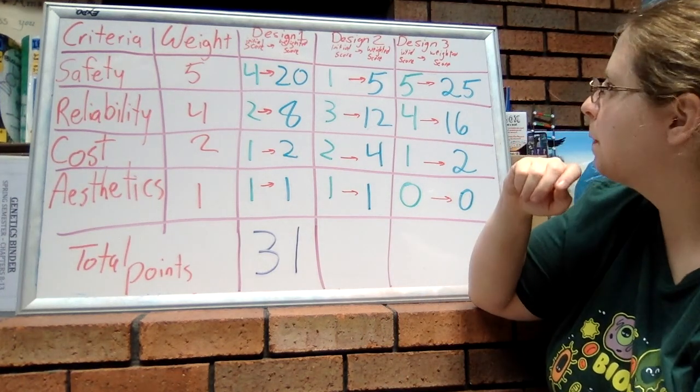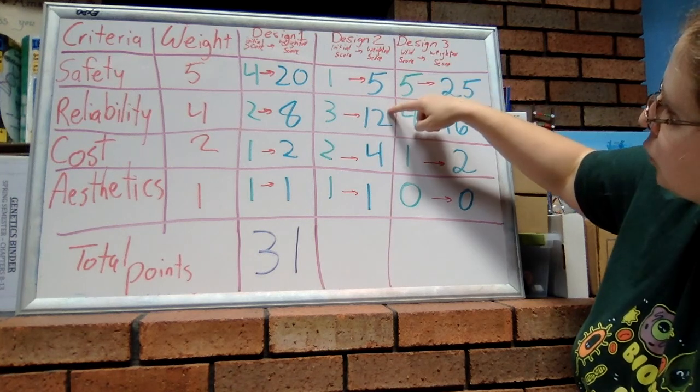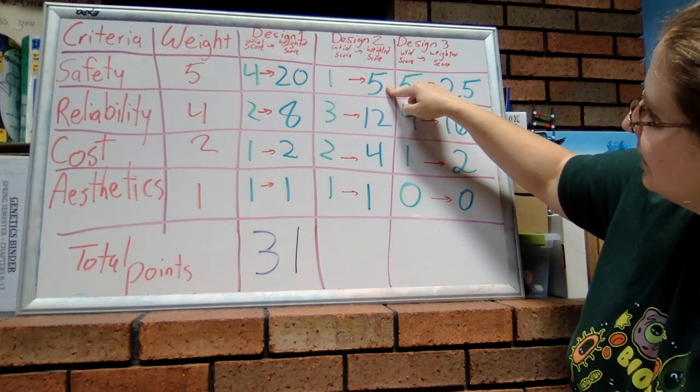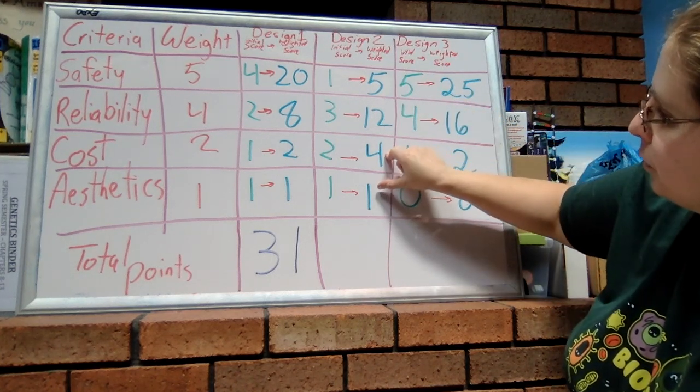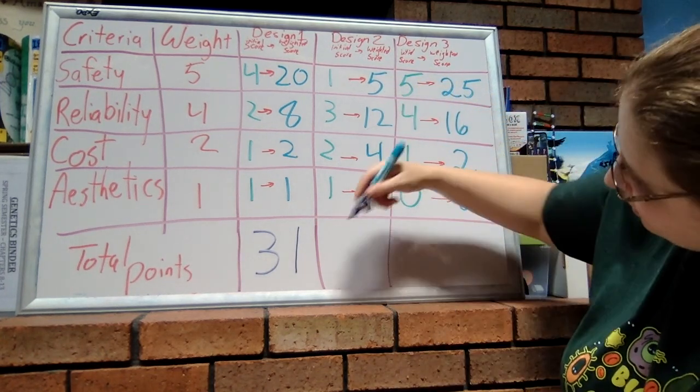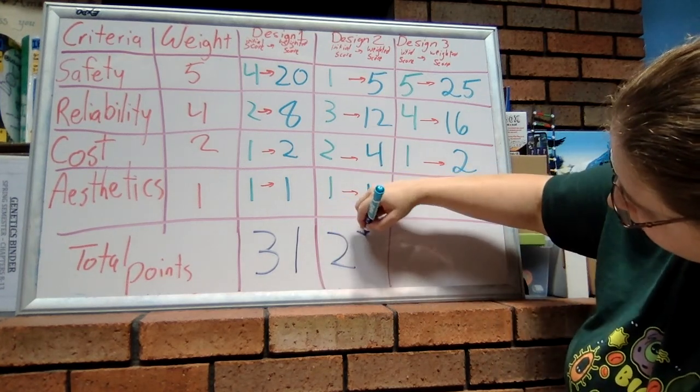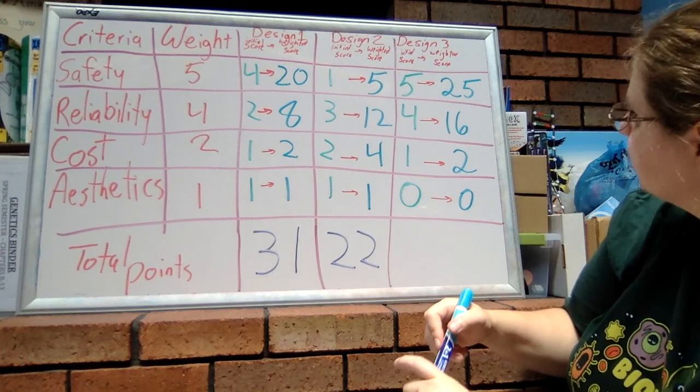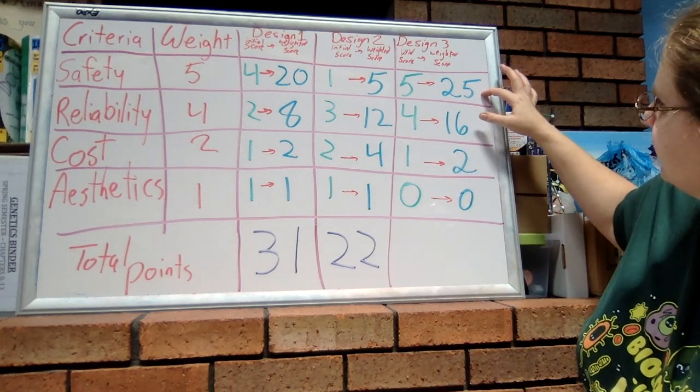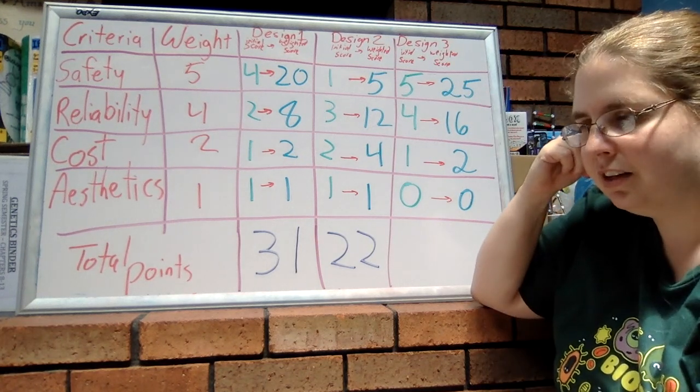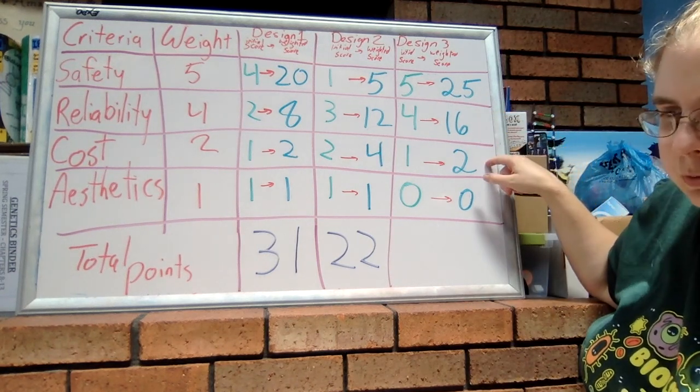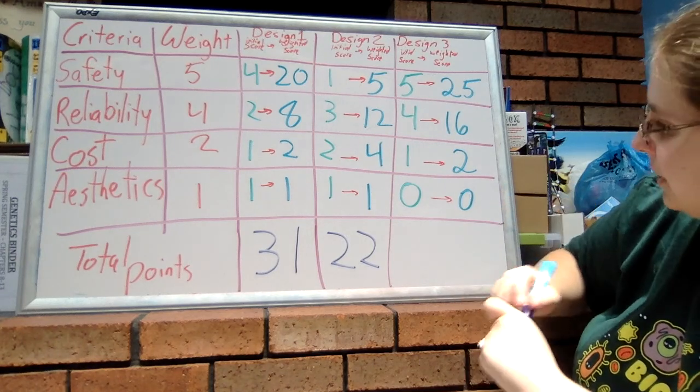So now we have 12 plus 5—oh, anyway, here we go—4 plus 1 is 5, plus 5 is 10, 10 plus 12 is 22. All right, so 25 plus 16 would be 41, 41 plus 2 is 43, plus 0 is still 43.